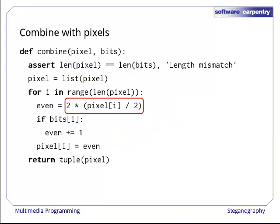For each of the bits, we figure out what value the corresponding color in the pixel should have if the bit is 0. We do this using a trick. When we divide by 2, Python throws away the remainder, so when we multiply by 2, we get back either the original number if it was even, or that value rounded down by 1 if it was originally odd. If the bit we want to store is a 1, we then add 1 to the pixel to make sure its value is odd. If the bit is a 0, we leave the evened-off pixel value alone. It's a bit of a hack, but if you trace the calculation for a few values, you'll see that it does the right thing.